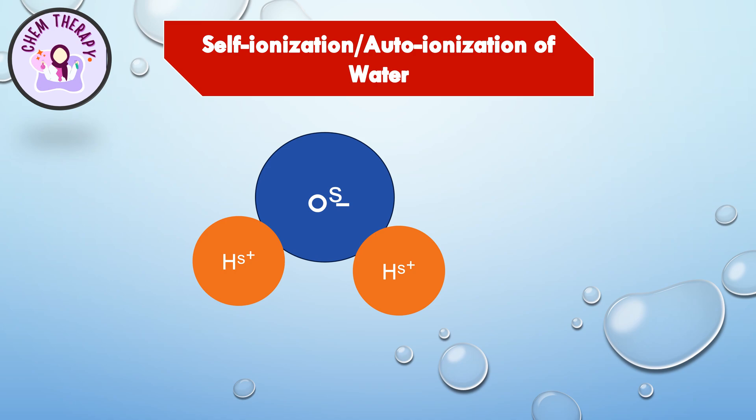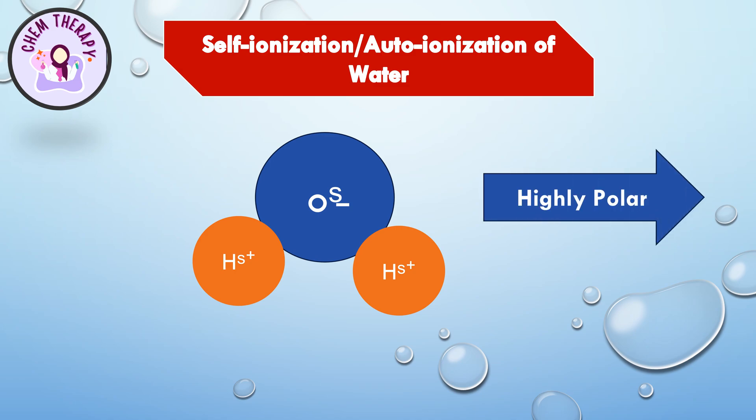In water, each oxygen atom is bonded to two hydrogen atoms. As oxygen is more electronegative than hydrogen, oxygen carries a partial negative charge, and each hydrogen carries a partial positive charge. Hence, water is a highly polar molecule.